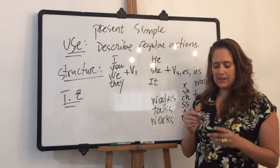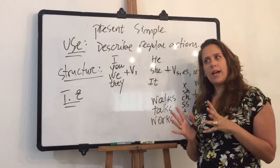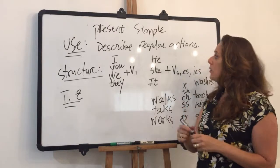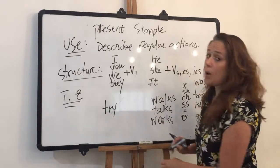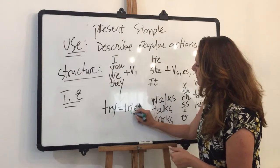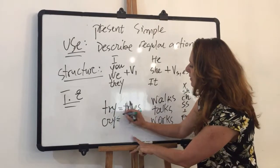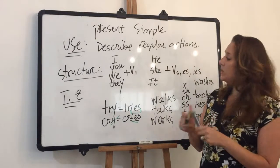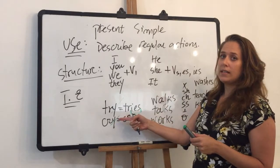When do I use IES? I use IES when I have a verb that ends with Y. I have to drop the Y and add IES. For example: try — you drop the Y and add IES. Cry — you drop the Y and add IES. So it looks like: it cries, the baby cries, she tries, he tries.